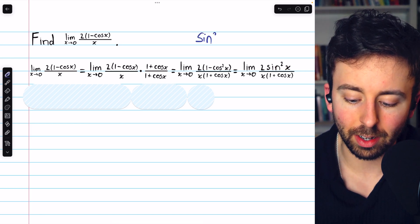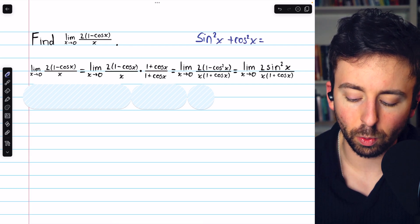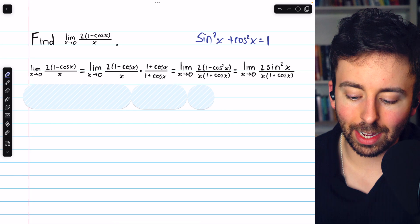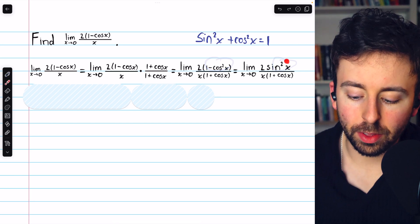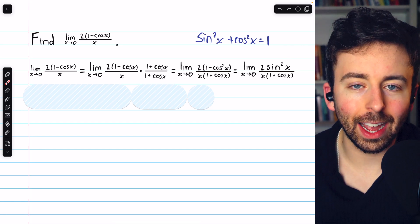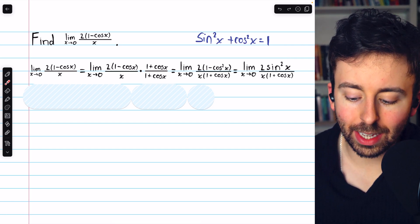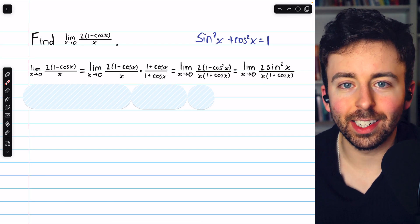Because of course, we know that sine squared x plus cosine squared x equals 1. So 1 minus cosine squared x is equal to sine squared x. Now, this sine squared x is two factors of sine x. One of those, we can take out into a separate limit along with this x in the denominator.